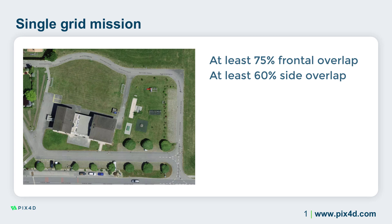If your scene has homogeneous, reflective, or dynamic areas, it is recommended to increase the overlap. The ideal overlap depends on the project's goals, the camera's resolution, and many other external factors. For Pix4D software, we recommend only the minimum values of 75% frontal overlap and 60% side overlap, since we have seen that these values generate consistently good results.